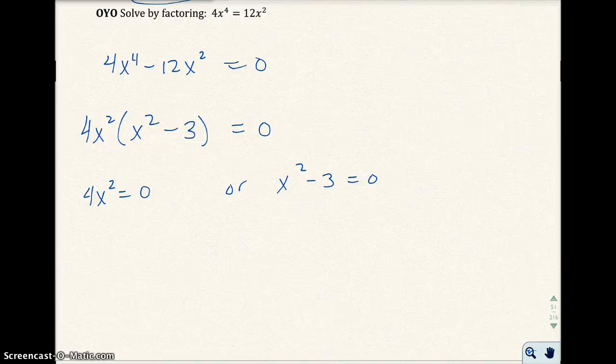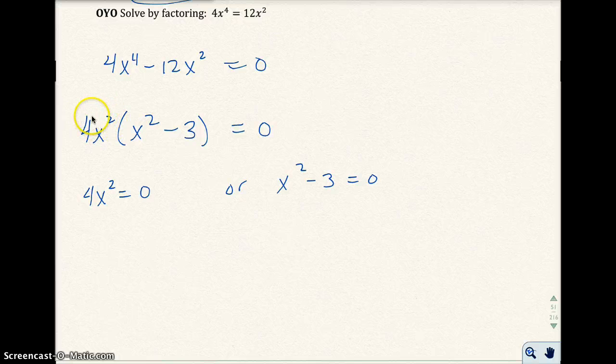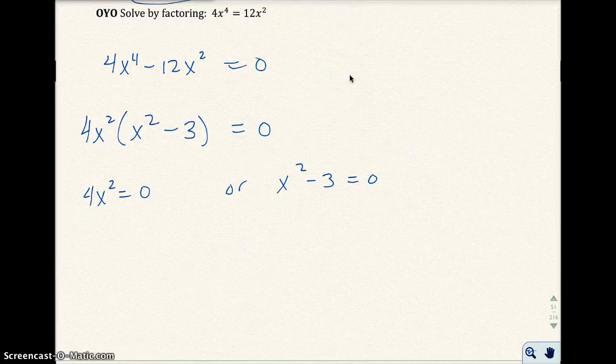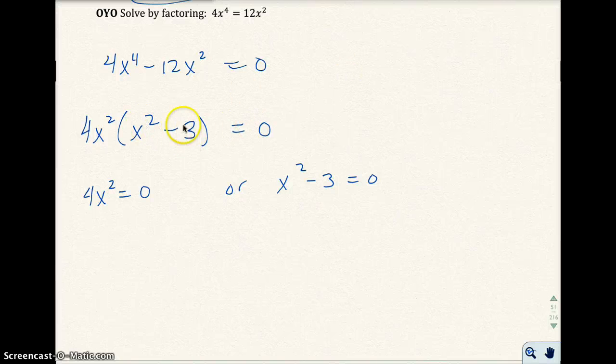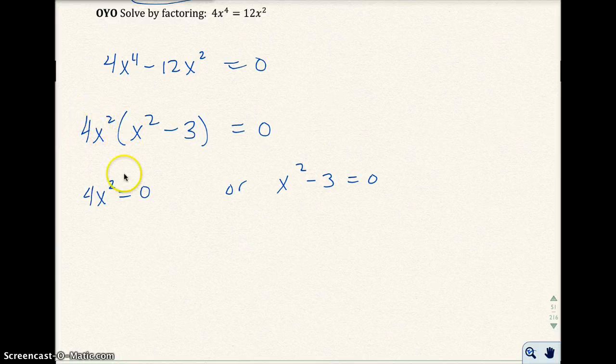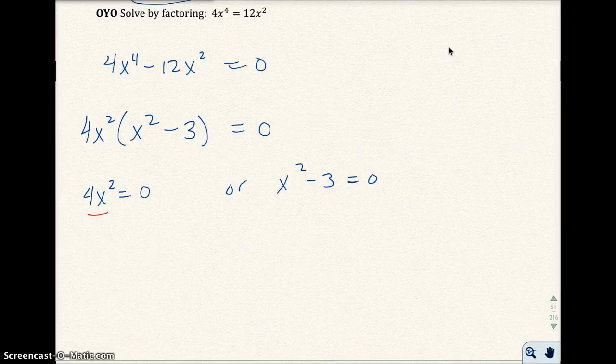I factored the left-hand side and pulled out the greatest common factor, which was 4x squared. So I ended up with x squared minus 3 left. A lot of students got confused at this point because it's not difference of two squares, so you can't factor this anymore. So I set this factor equal to zero, which I did there, or this factor equals zero, which I did right here.